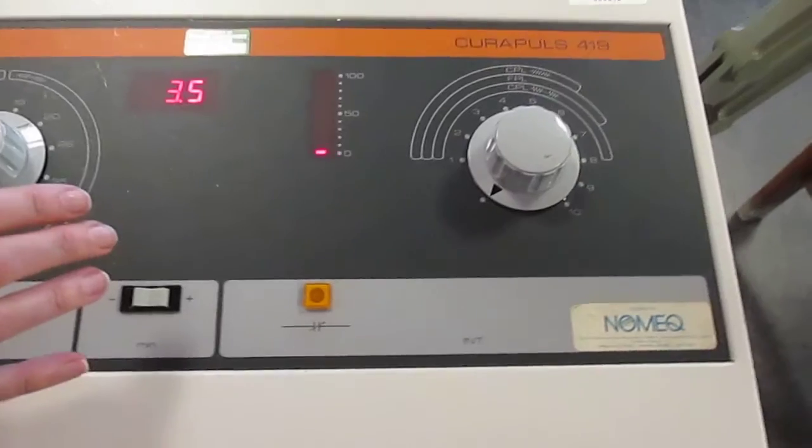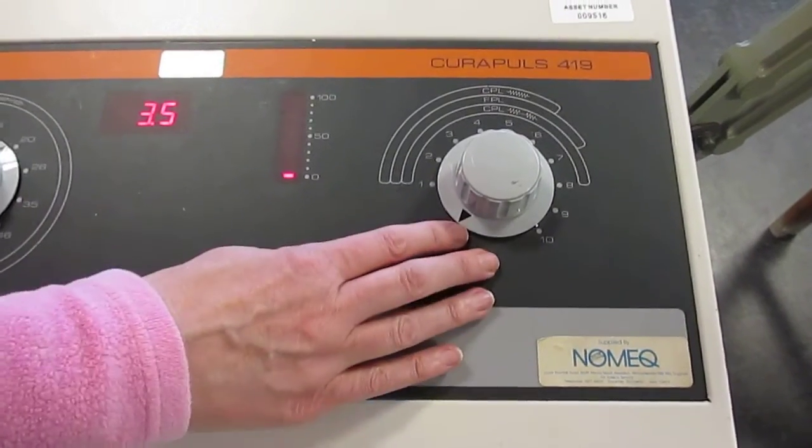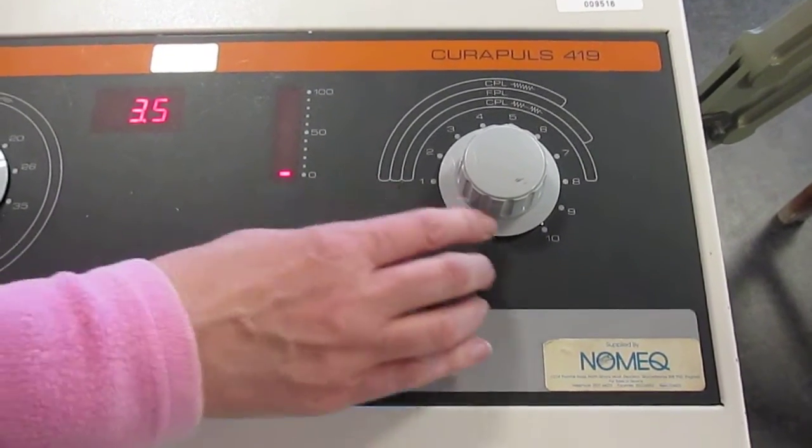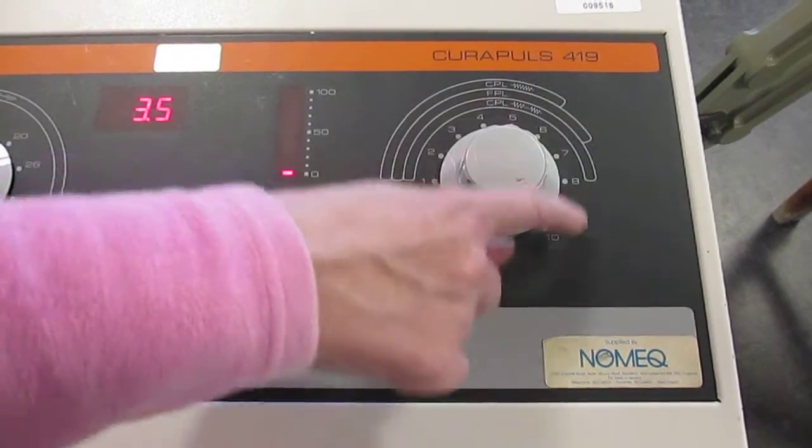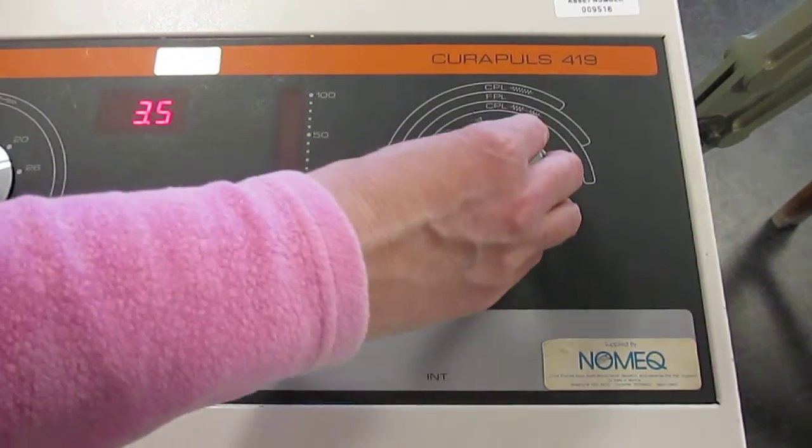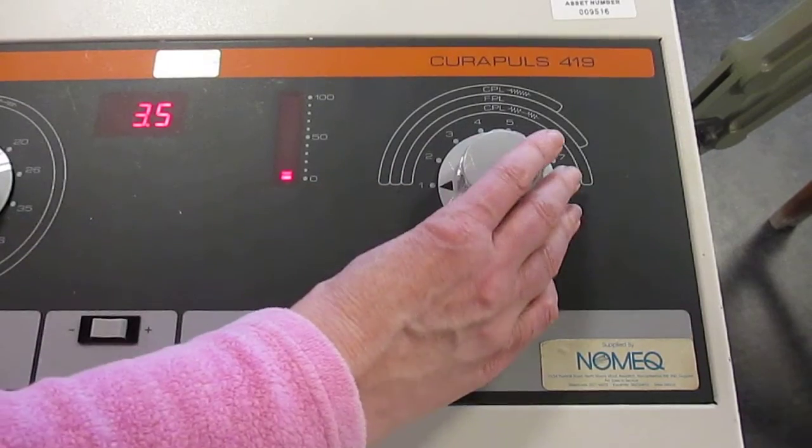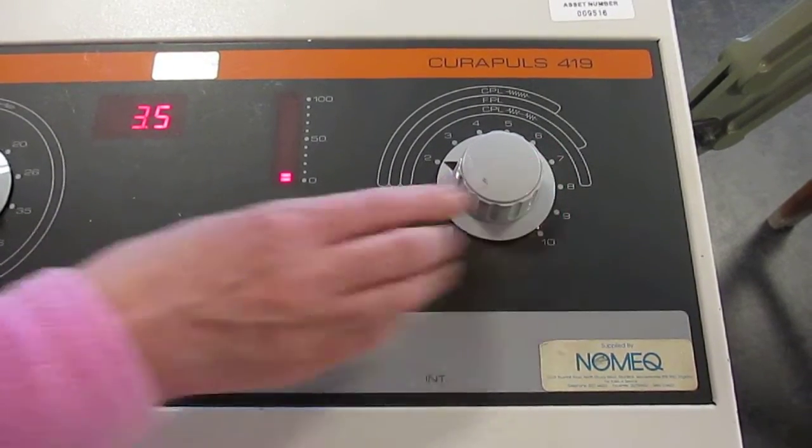Finally, you're going to increase the peak pulse power, which is numbered from 1 to 10. 1 being 10%, 10 being 100%. You can steadily increase the dial and you will see the gauge here increasing.